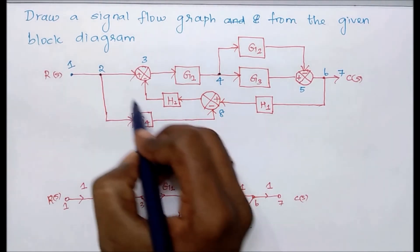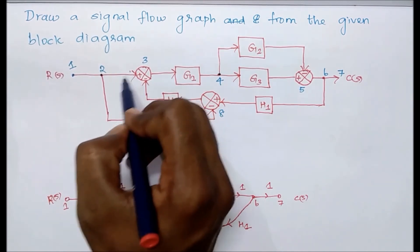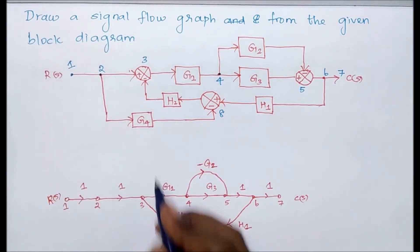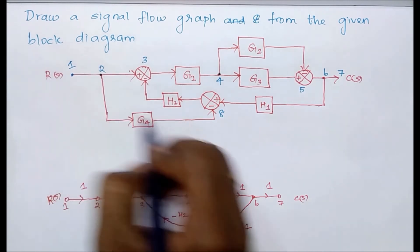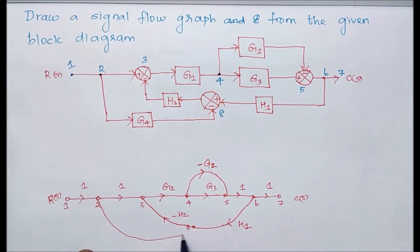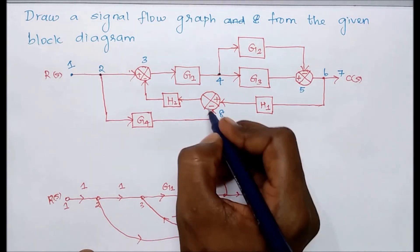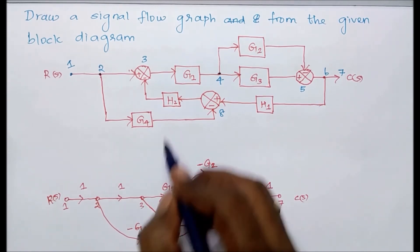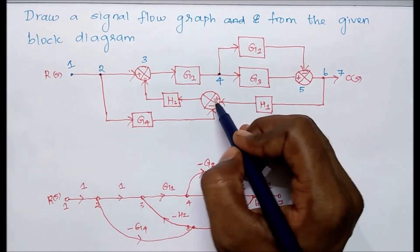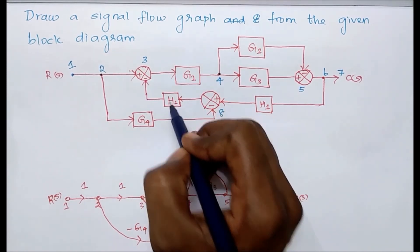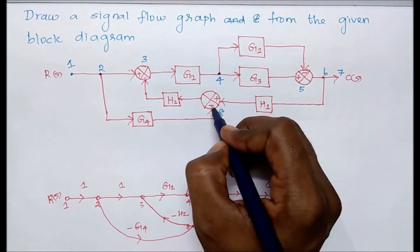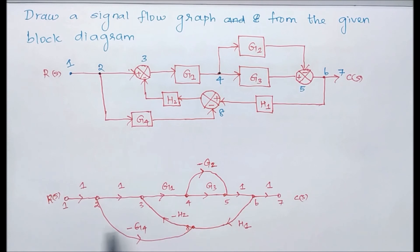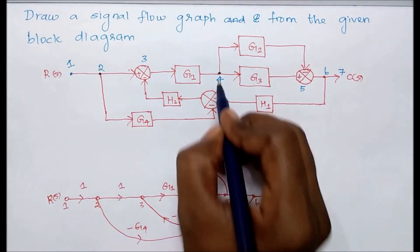Next, from node two there is a parallel path going to node eight — these two are parallel, so it is a parallel path from two to eight. There is a negative sign here, so we use minus g4. Confirming the signs: at this summing point there is a negative, so minus h2; here also minus, so minus g4; here also minus, so minus g2. This is the signal flow graph for the given block diagram.